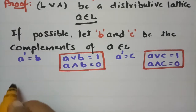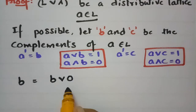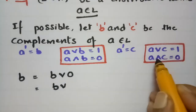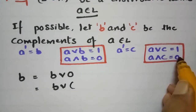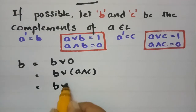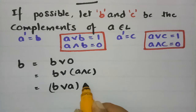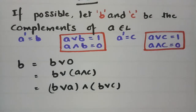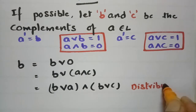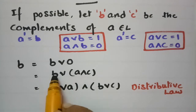To prove this, let us consider the element B. We can write B as B join 0 (the least element). In place of 0 I am writing A meet C, since A meet C equals 0. So B = B join (A meet C). Applying the distributive law, this becomes (B join A) meet (B join C). This step uses the distributive law.